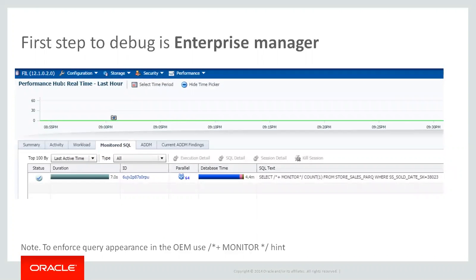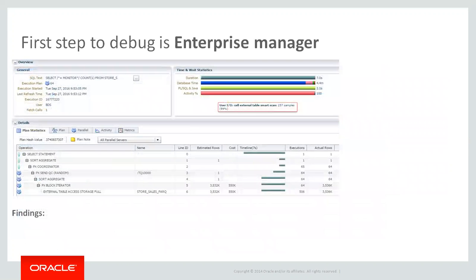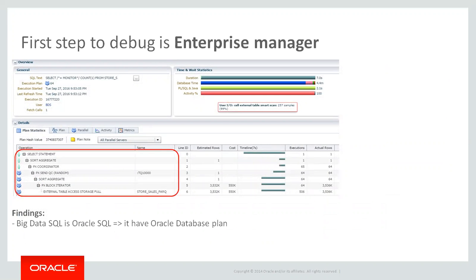The first step is going to be Enterprise Manager. You go to Enterprise Manager or Database Express, open the Performance bookmark, open Monitored SQL, and here you can find SQL statements which were run recently or which are running right now. To get more details, you drill down on a concrete SQL ID — click on this SQL ID and get more details about your query. First of all, big data SQL is Oracle SQL — it has an Oracle plan, it has Oracle statistics, and many optimizations relevant for Oracle database are relevant here too.